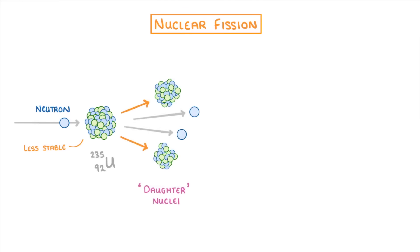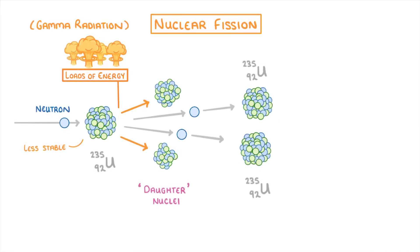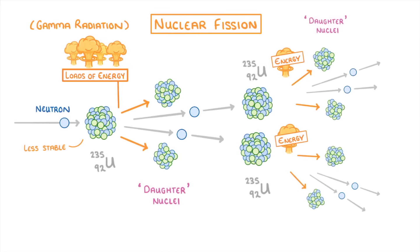It also releases two or three more neutrons, and importantly loads of energy in the form of gamma radiation. Each of the neutrons can then go on to repeat the process all over again with another uranium nuclei. And so more daughter nuclei, energy, and neutrons will be released, which again allows the process to start over.